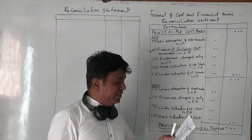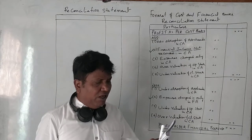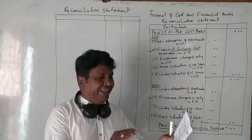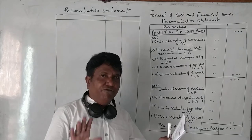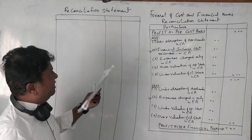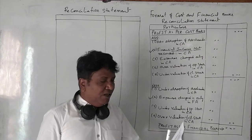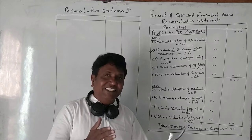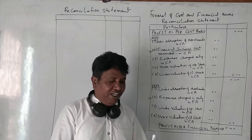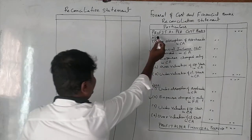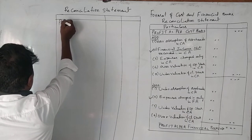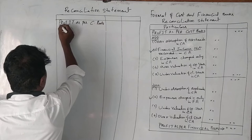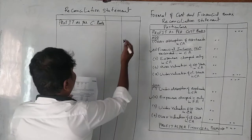We are required to prepare a reconciliation statement and also ascertain profit as per financial accounting. We have certain particulars — cost book items and financial book items — and we have to look at the format. He has given profit as per cost accounting records as 385,000, but he has not given profit as per financial books. So first we write: profit as per cost books is given as 385,000.